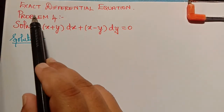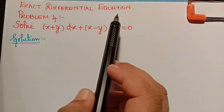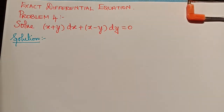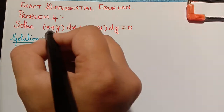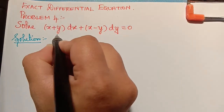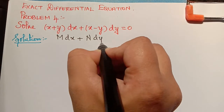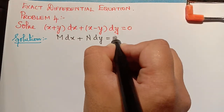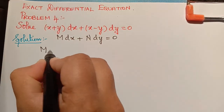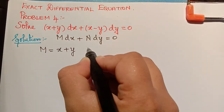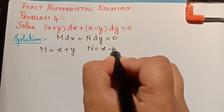Under the topic of exact differential equations, we have a problem: solve (x + y)dx + (x - y)dy = 0. This equation is of the form Mdx + Ndy = 0, where M equals x + y and N equals x - y.